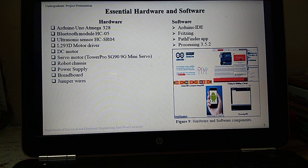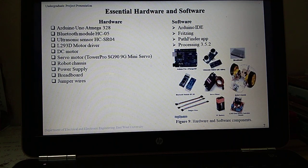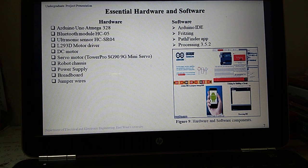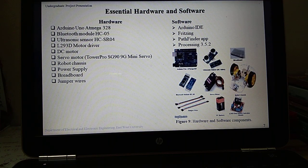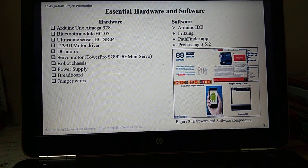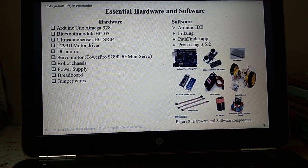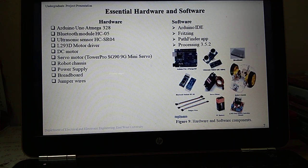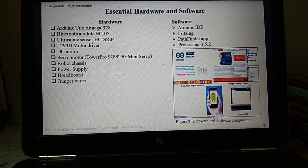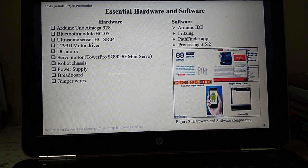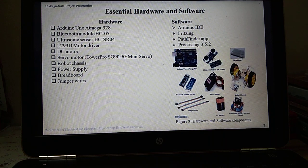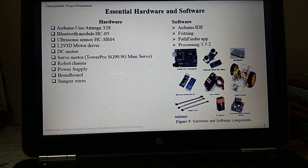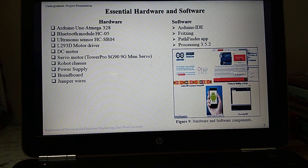These are the hardware and software components we have used in this project. The hardware components are: Arduino Uno ATmega328, Bluetooth module HC-05, ultrasonic sensor HC-SR04, L293D motor driver, DC motor, servo motor Tower Pro SG90 9g mini servo, robot chassis, power supply, breadboard, and jumper wires. The software components are: Arduino IDE, Fritzing, Pathfinder app, and Processing 3.5.2.